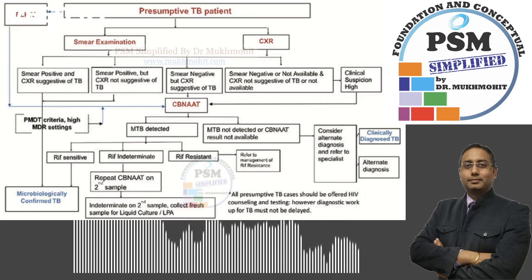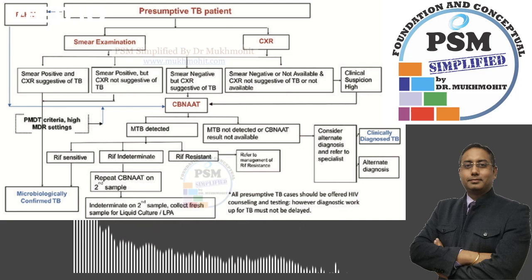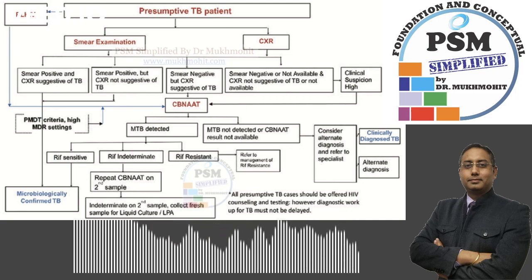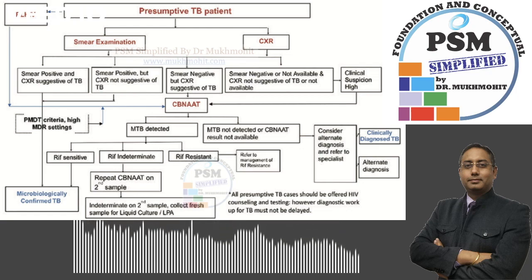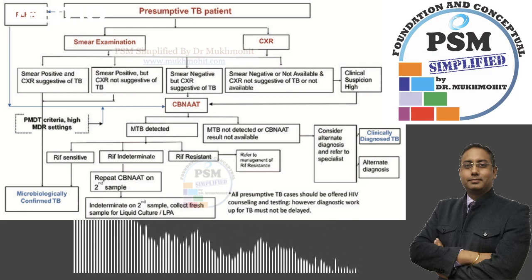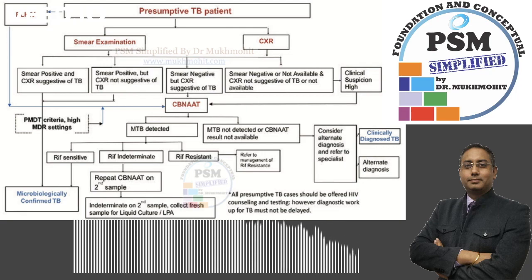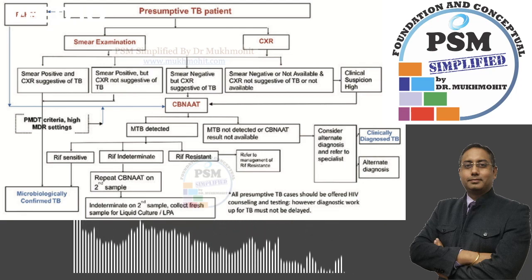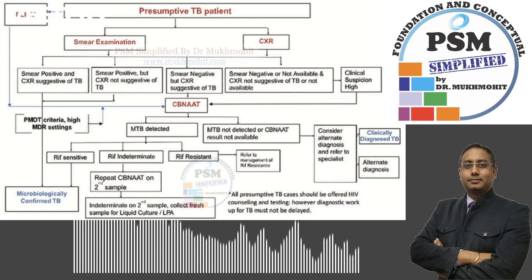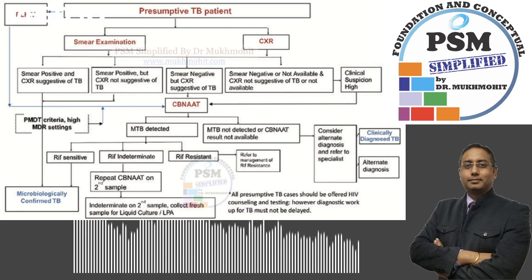So the first thing is sputum microscopy. The algorithm I have shown has no particular fixed order — in a tertiary care center, if the patient is having symptoms, we can directly do any of the tests in any order. But for the diagnosis of pulmonary tuberculosis, the sputum microscopy is the most essential test — it is the most sensitive and specific test for the diagnosis of pulmonary tuberculosis. Thank you so much.